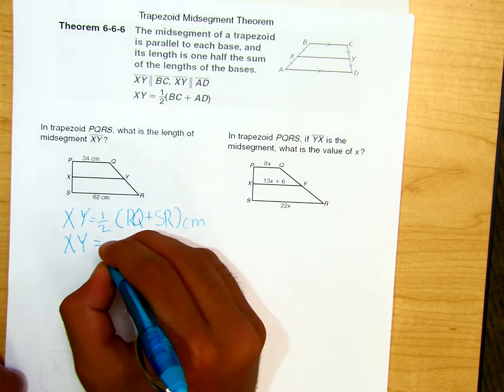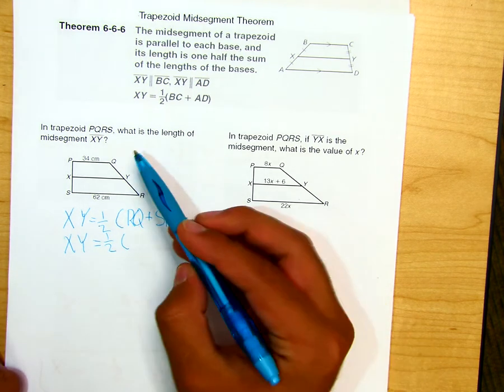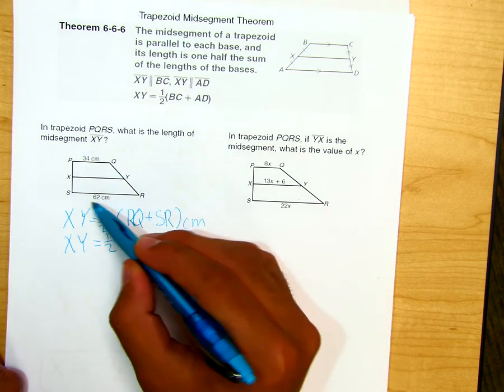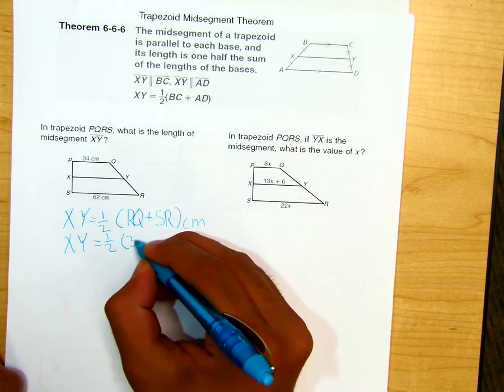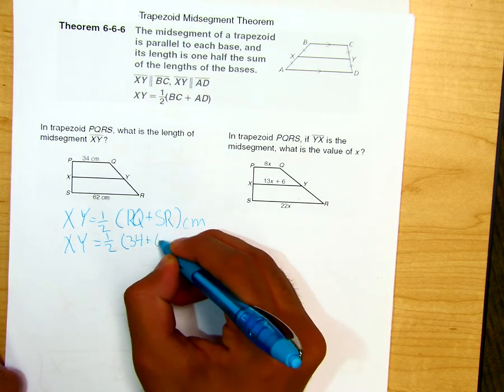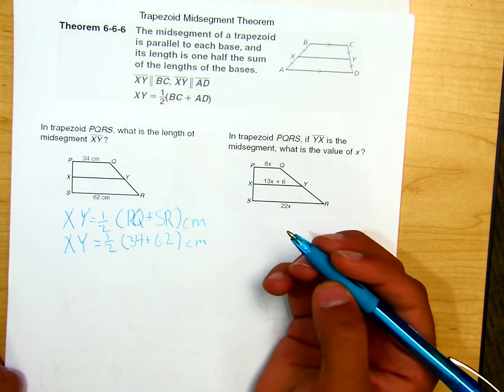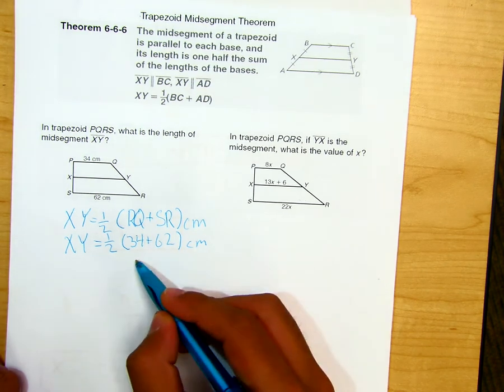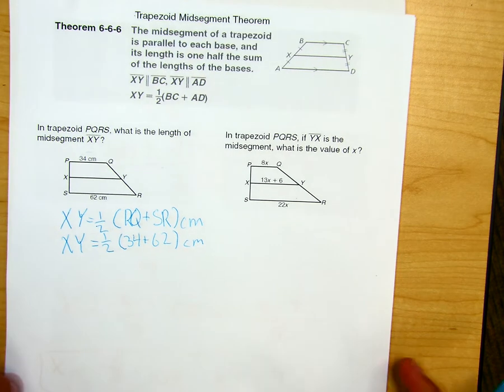XY will then equal one-half. So you would use this in place of PQ. Same goes for SR when it comes to 62. So it's 34 plus 62 centimeters. So XY equals one-half, parentheses, just 34 plus 62 centimeters. Any questions?